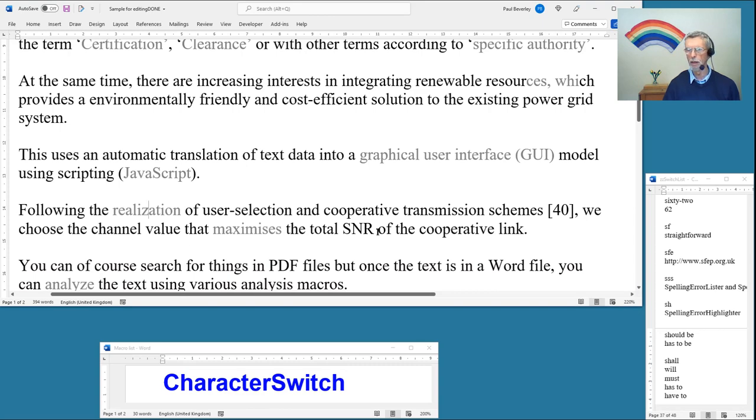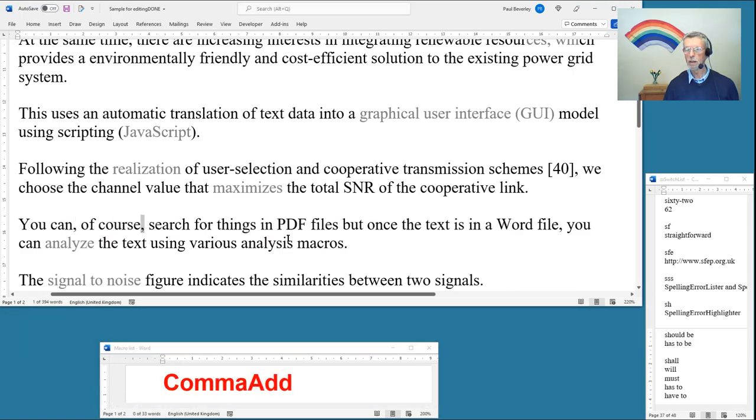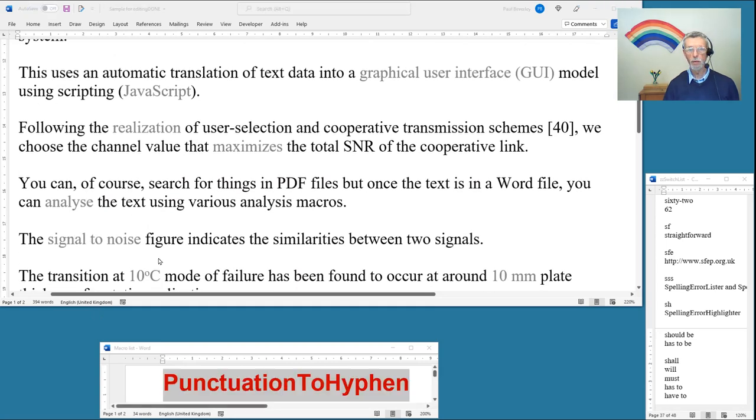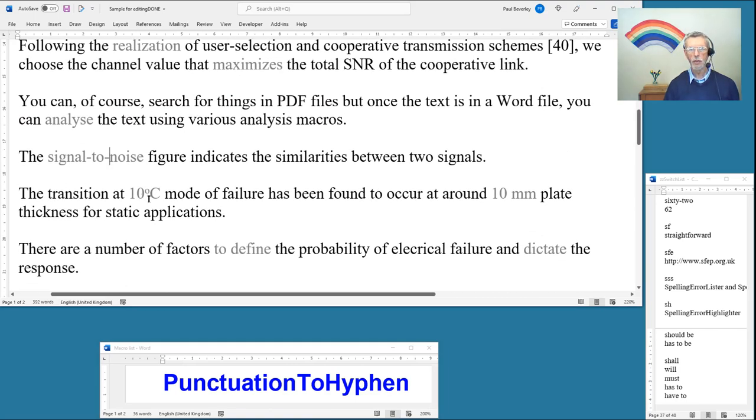Following the realization of user-selection and cooperative transmission schemes, we maximize the total SNR of the cooperative link. So that changes the Z, runs along the line, finds the S, turning it into a Z. There's another one here, maximizes, that should be a Z as well. You can of course search for things in PDF file once the text is in Word file. Another one the same, analyze. That's the other way round of course, so that's going from Z to S.